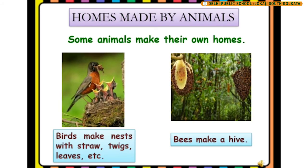Let us know about the homes made by animals. Some animals make their own homes. For example, birds make nests with straw, twigs, and leaves. Bees make a hive.